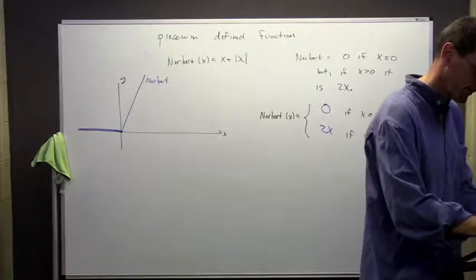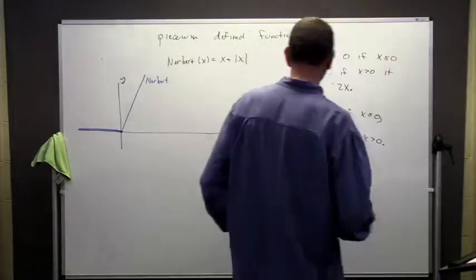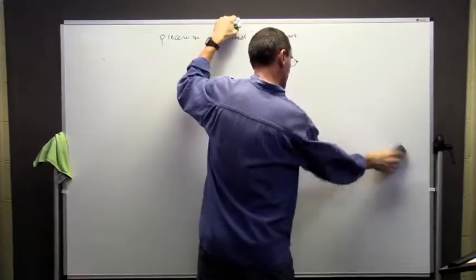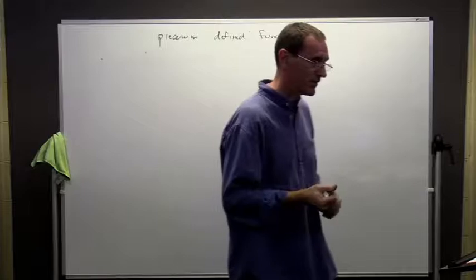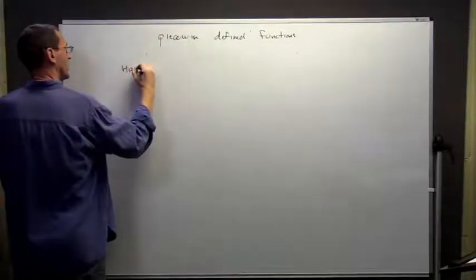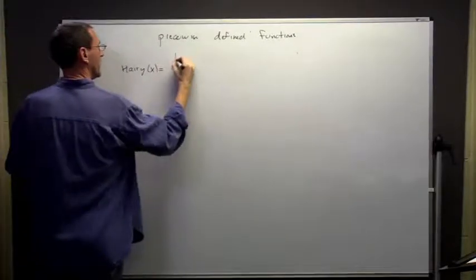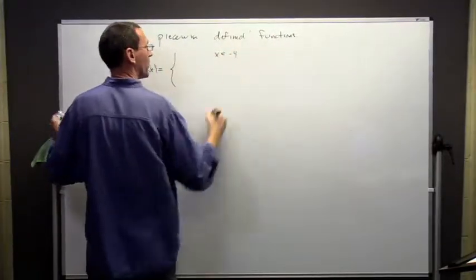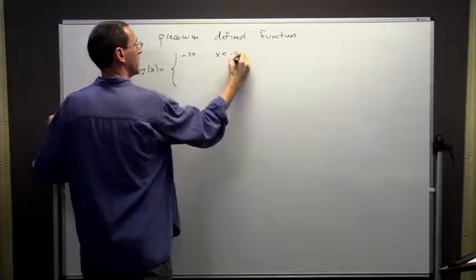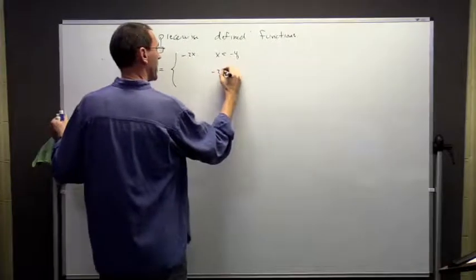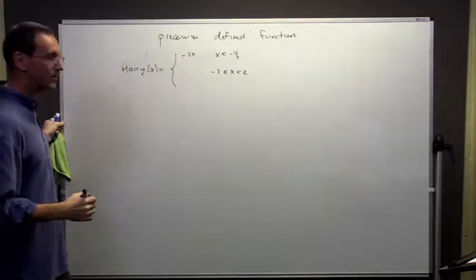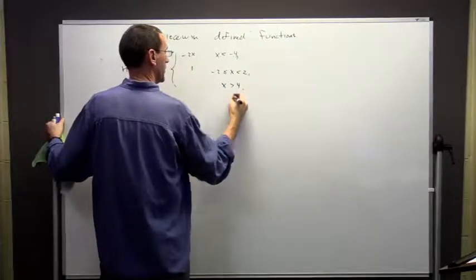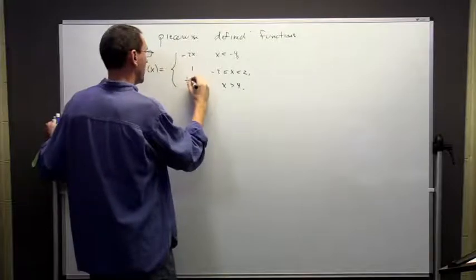Let's look at another example. I'm going to give you a piecewise function and then try to graph it — so we're going to go the other way. We're going to call this function Harry. It's going to be piecewise defined: if x is less than minus 4, we're going to use the function minus 2x. If x is between minus 2 inclusive but not 2, we're going to use 1. And if x is bigger than 4, we're going to use one-half x.